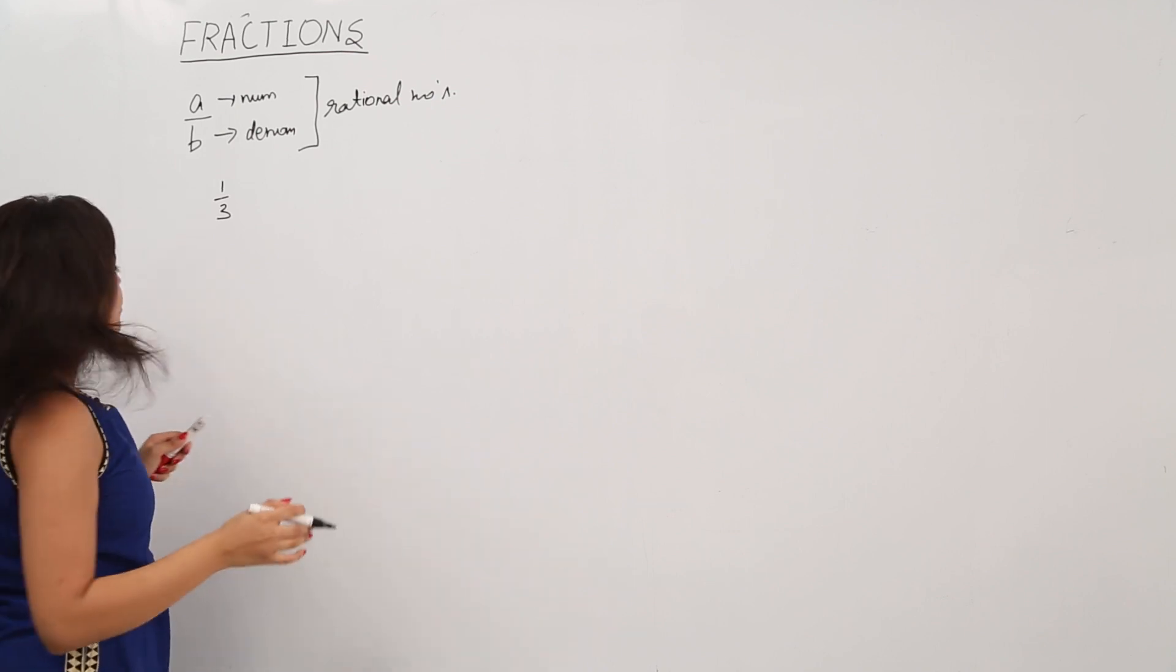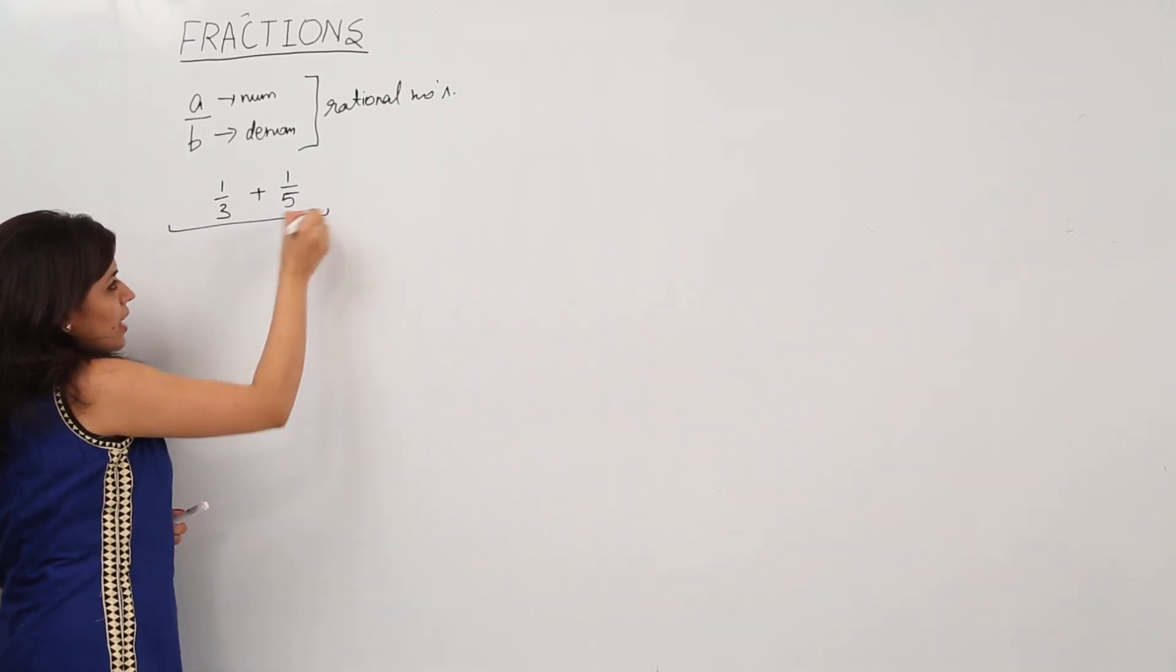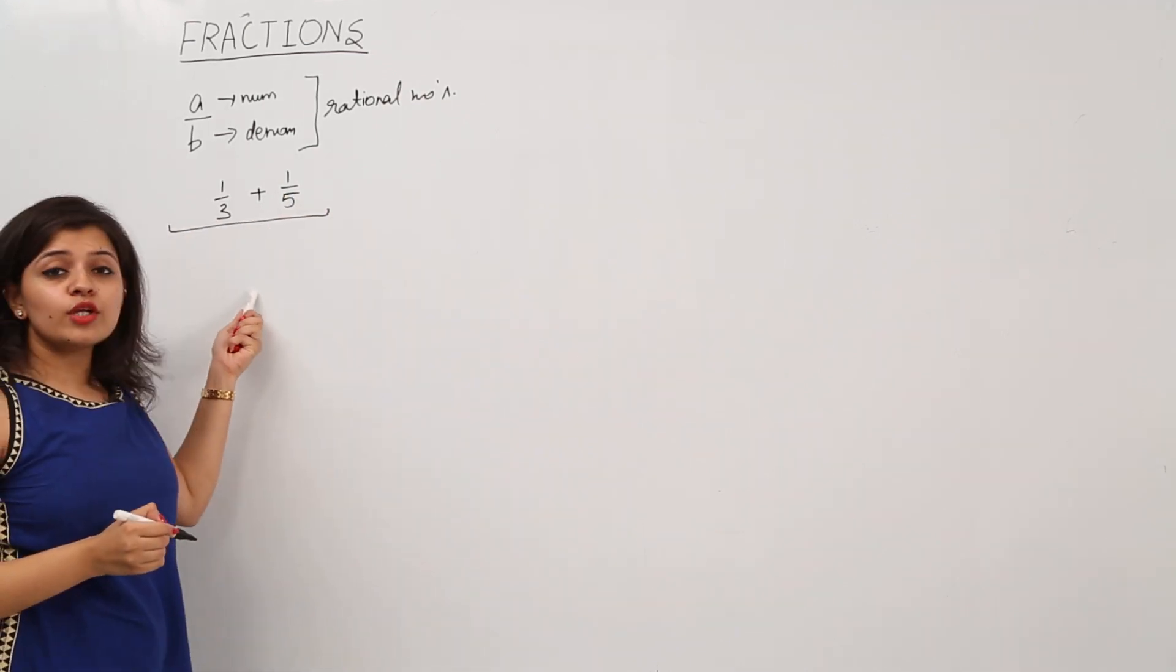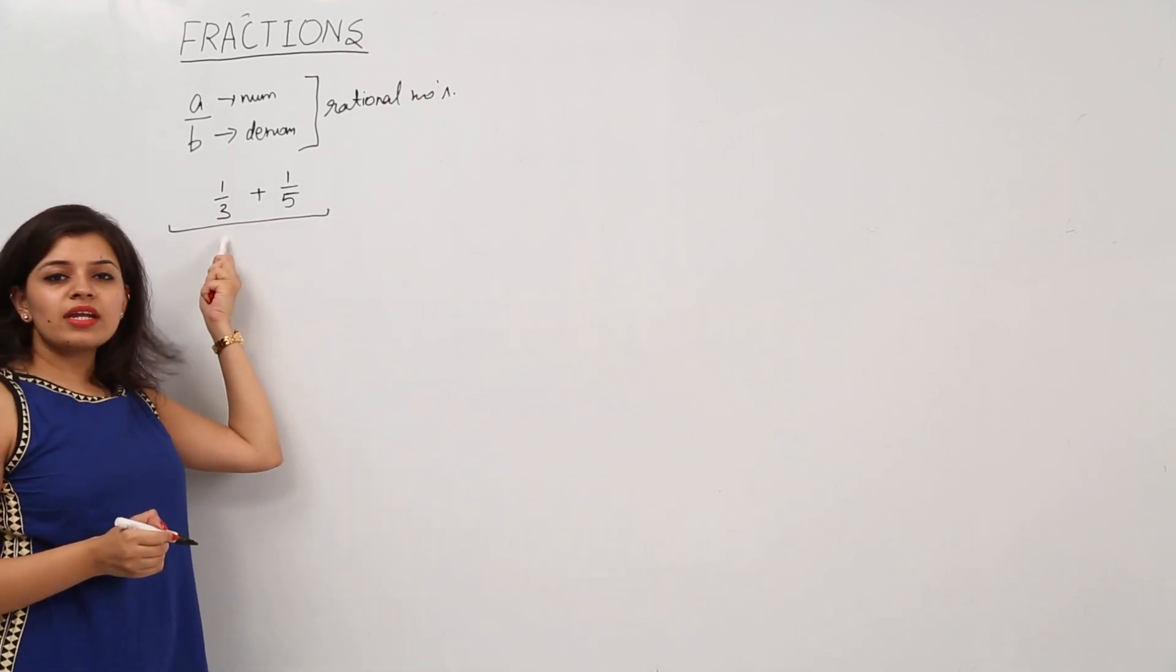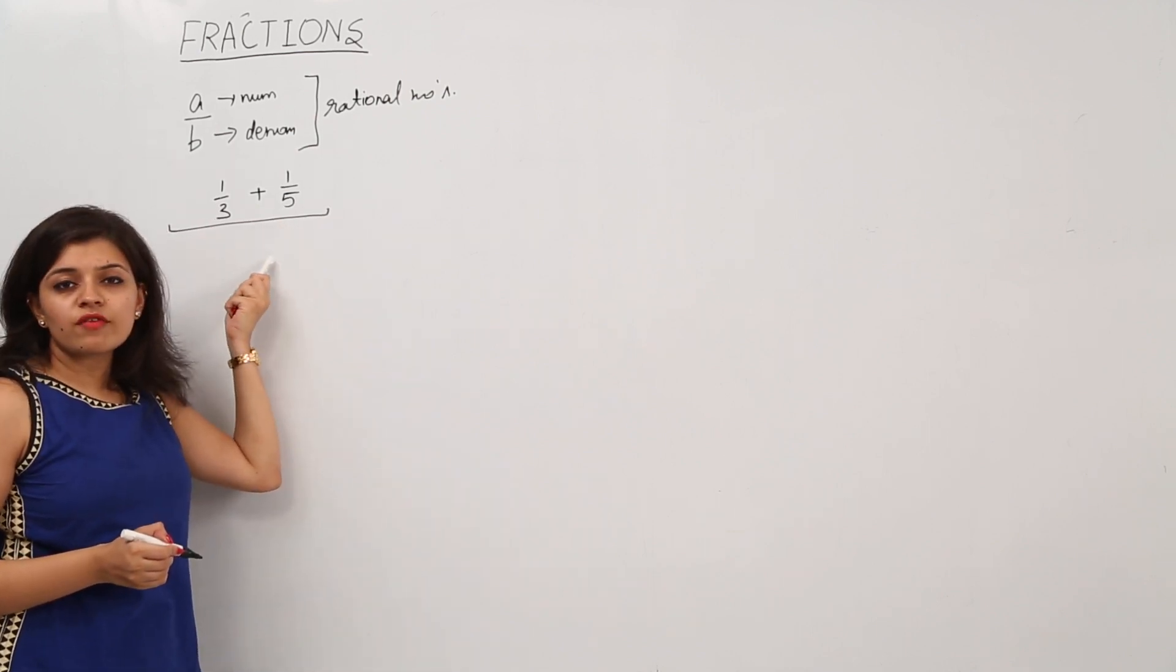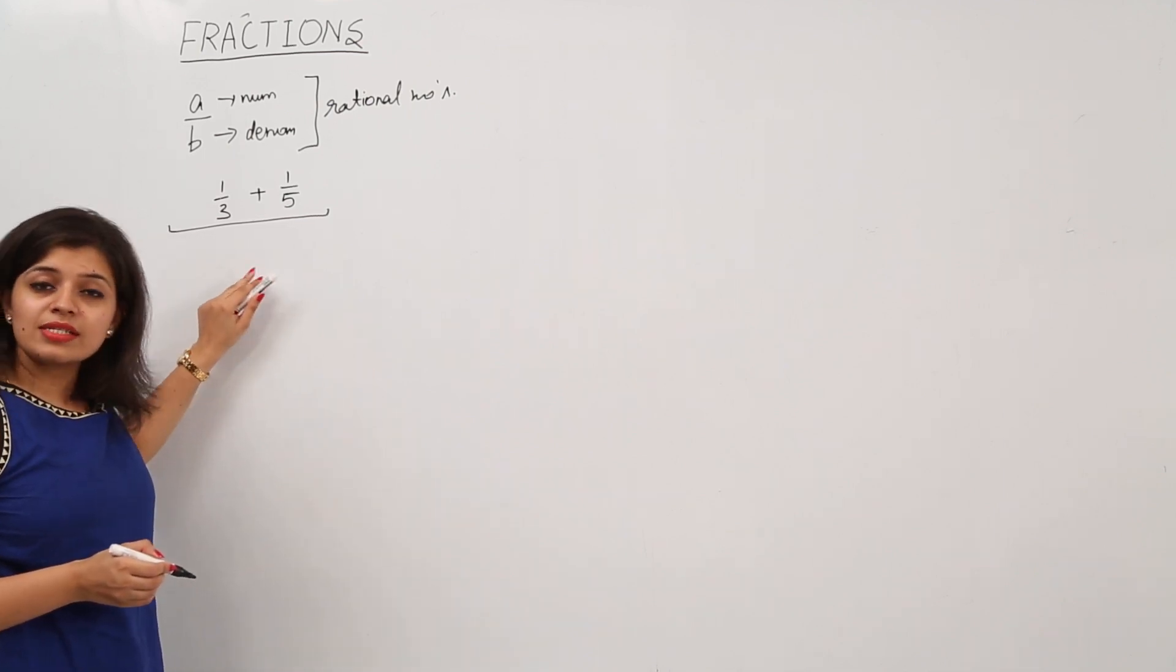If we have to add 2 fractions, let's say we have the numbers 1 by 3 and 1 by 5. For 2 rational numbers to add, we need to have the denominator same. In this case, the denominator is 3 here and 5 here. So to add these 2 numbers we need to make sure the denominators are same.